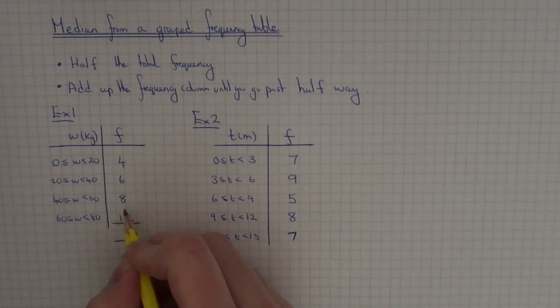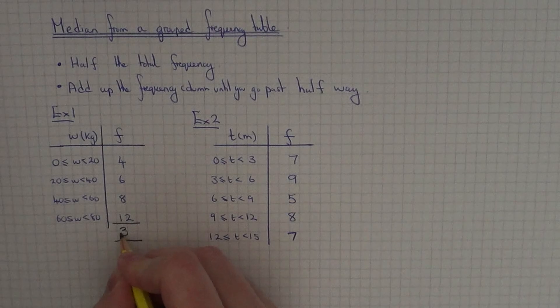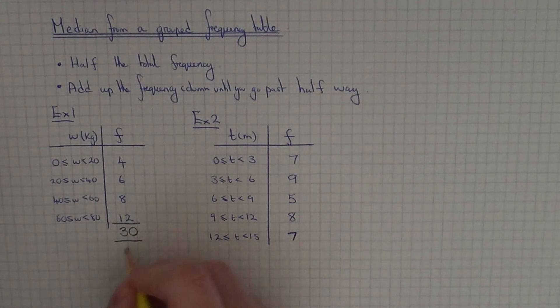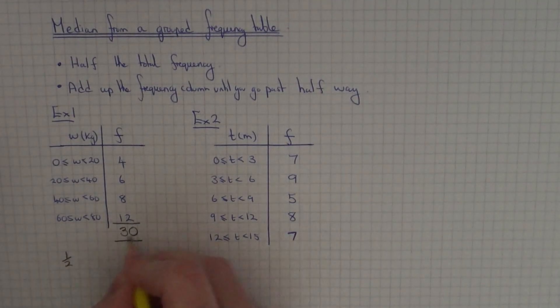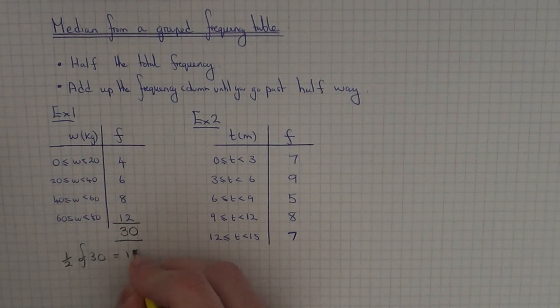You've got 12, 20, 26, and 30. So the first thing we need to do then is half the total frequency. Half of 30 is equal to 15.